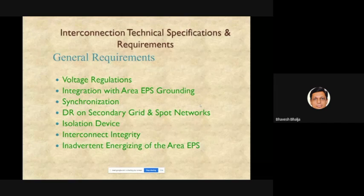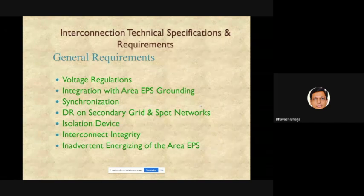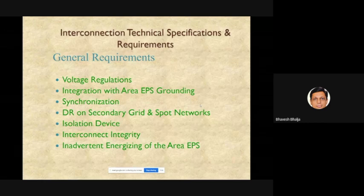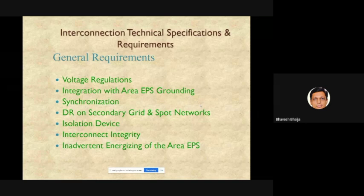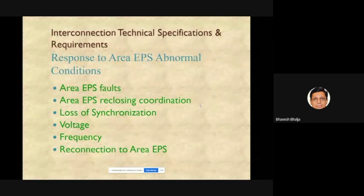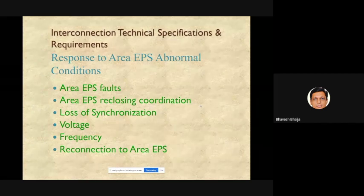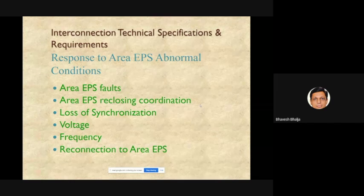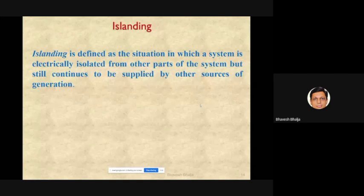We also need to consider what type of isolation device to use to disconnect and protect the DG if something goes wrong. Additionally, we must consider the impact of faults — whenever a fault occurs, how it creates an impact on the system and on the DG is another aspect to address before discussing islanding.